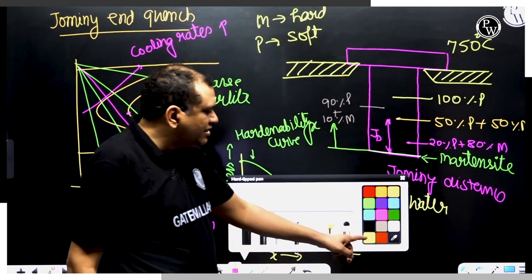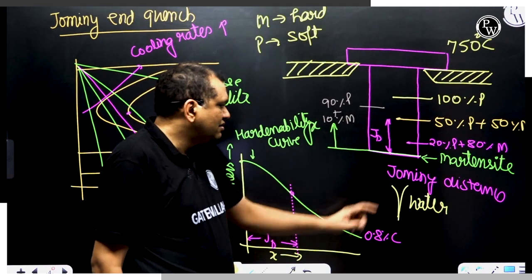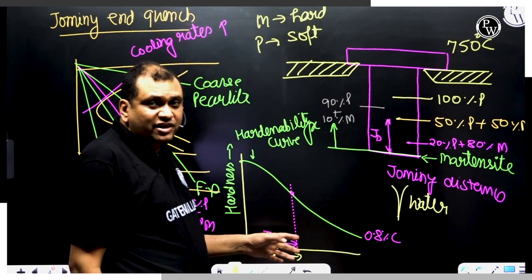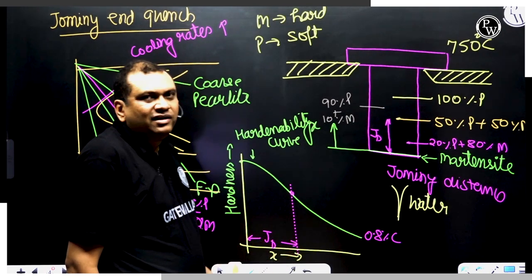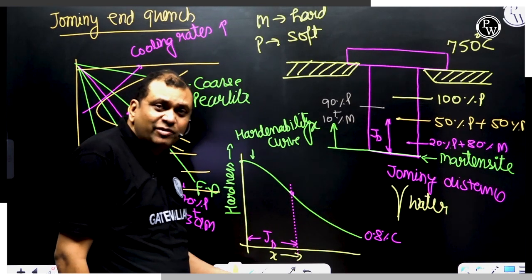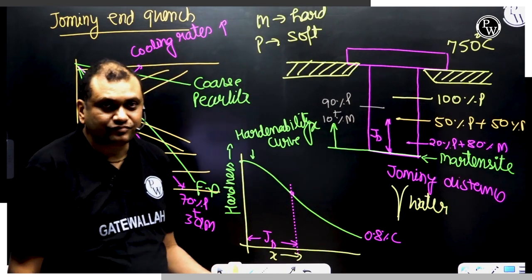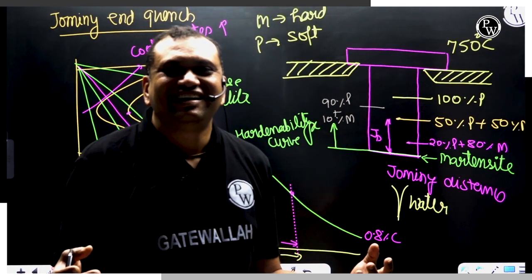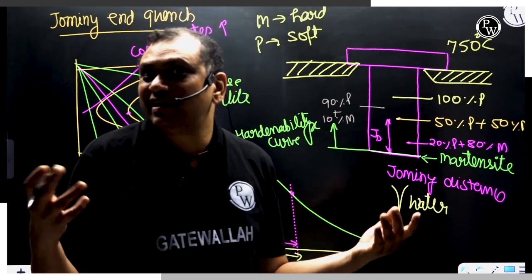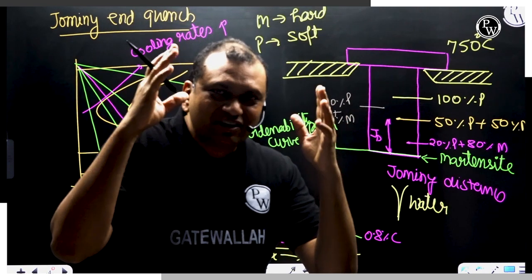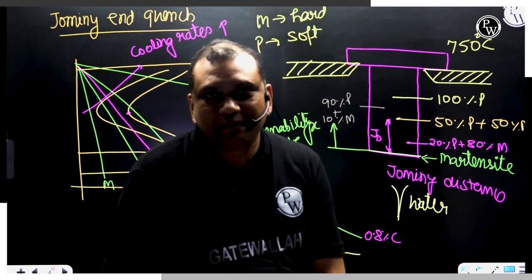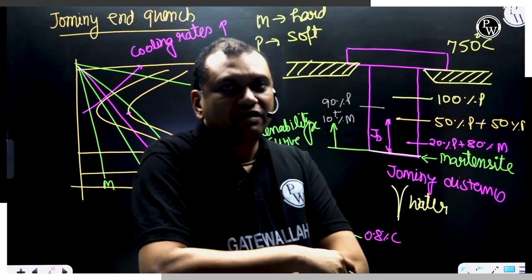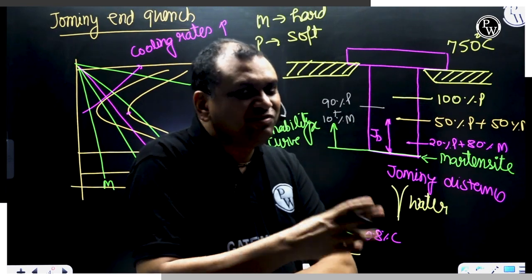The Jominy distance JD tells you the hardenability of the material — if the JD value is more, the material is more hardenable. This is the hardenability curve for eutectoid composition, because only the eutectoid composition will produce 100% martensite. The eutectoid composition also produces 100% ferrite if cooled slowly.